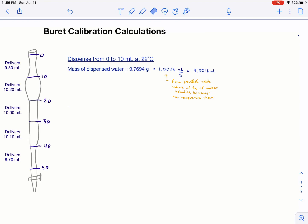Say you dispensed from 0 to 10 milliliters at 22°C. Now you have the mass that you weighed out. This number I have right here is actually the difference. So you weigh the flask, you put the water in, you cap it, you weigh it again, subtract. This is the difference.